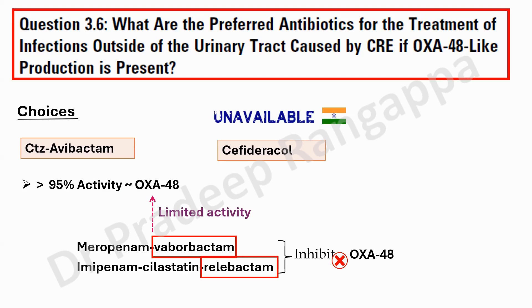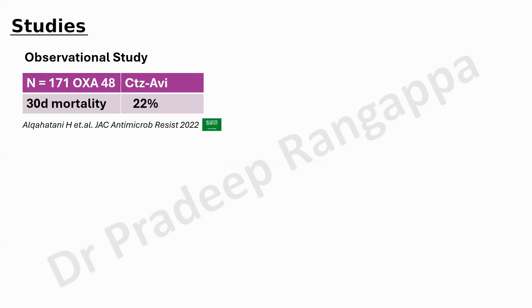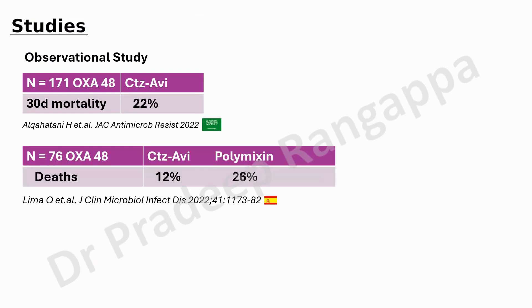What is the substantiation for recommending ceftazidime-avibactam? There are three key studies. The first was an observational study without a control arm, looking at 171 OXA-48 strains from Saudi Arabia — 30-day mortality with ceftazidime-avibactam was 22%, observation only with no control arm. The second study came from Spain, comparing polymyxin and ceftazidime-avibactam in 76 OXA-48 organisms. Clinical outcome deaths were significantly less with ceftazidime-avibactam compared to polymyxin.